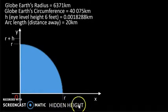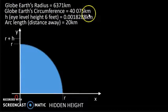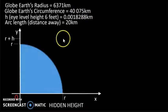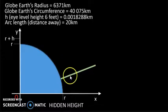Now let's calculate hidden height. We have the globe Earth's radius of 6,371 km and the globe Earth's circumference of 40,075 km. Let's assume the observer's eye level is at a height of 6 feet, which converts to 0.0018288 km. And let's assume this building is 20 km away.